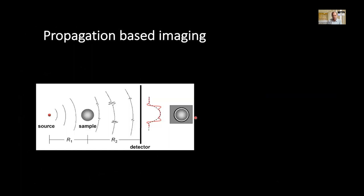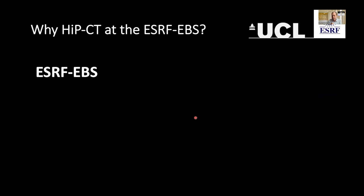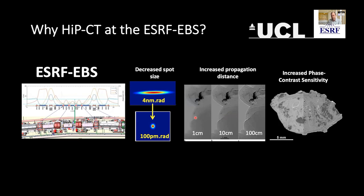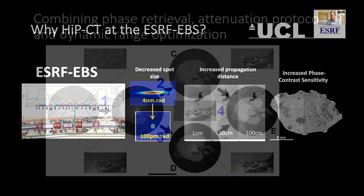We use propagation-based phase contrast imaging, particularly enhanced by the ESRF's Extremely Brilliant Source upgrade. The upgrade reduced source divergence from ~4 nanometer to ~100 picometer — 1/40th of the previous value — and achieved a much smaller spot size. This allows a much greater propagation distance and hence greater phase contrast, enabling imaging of structures down to one micron inside whole intact organs.